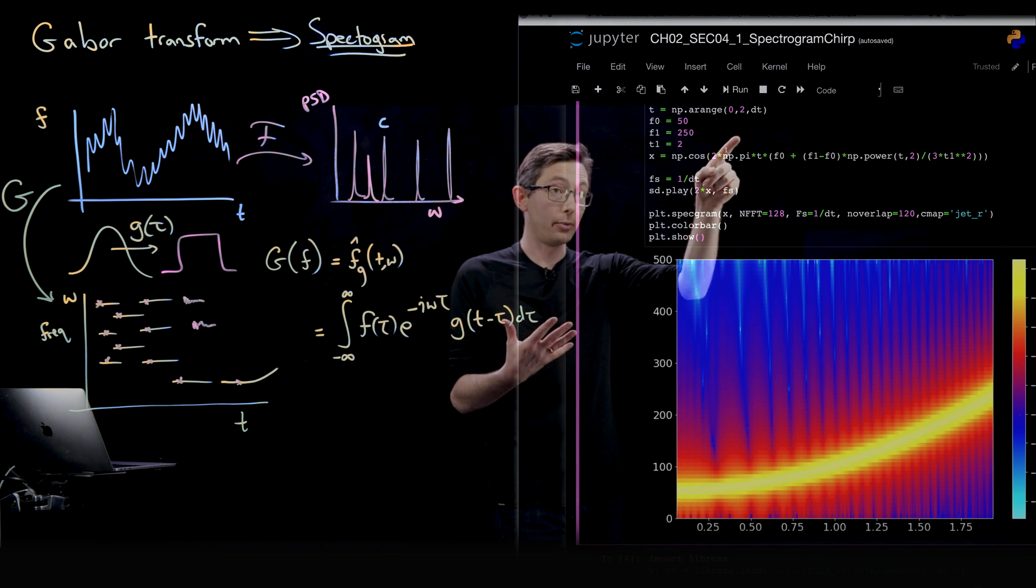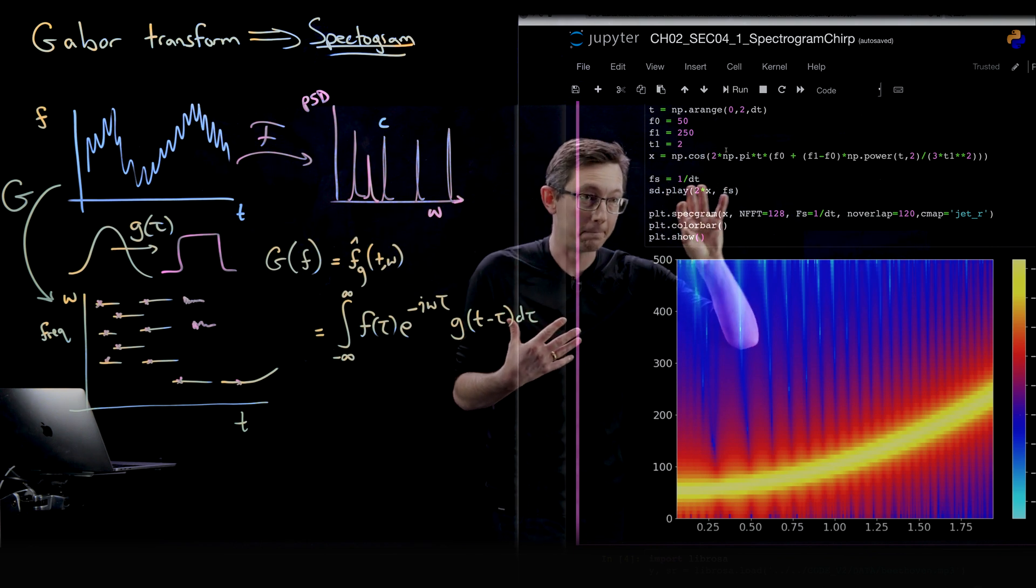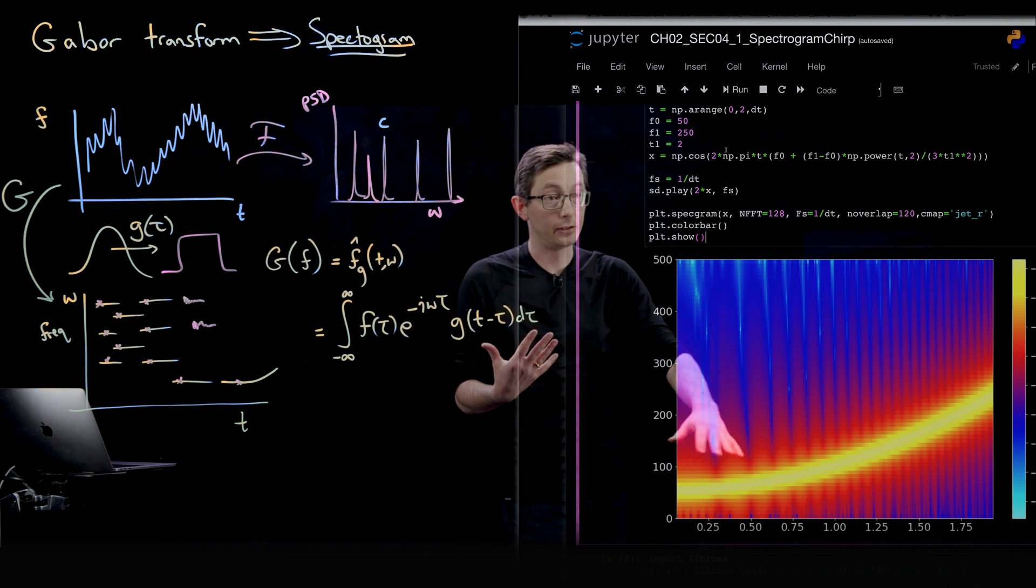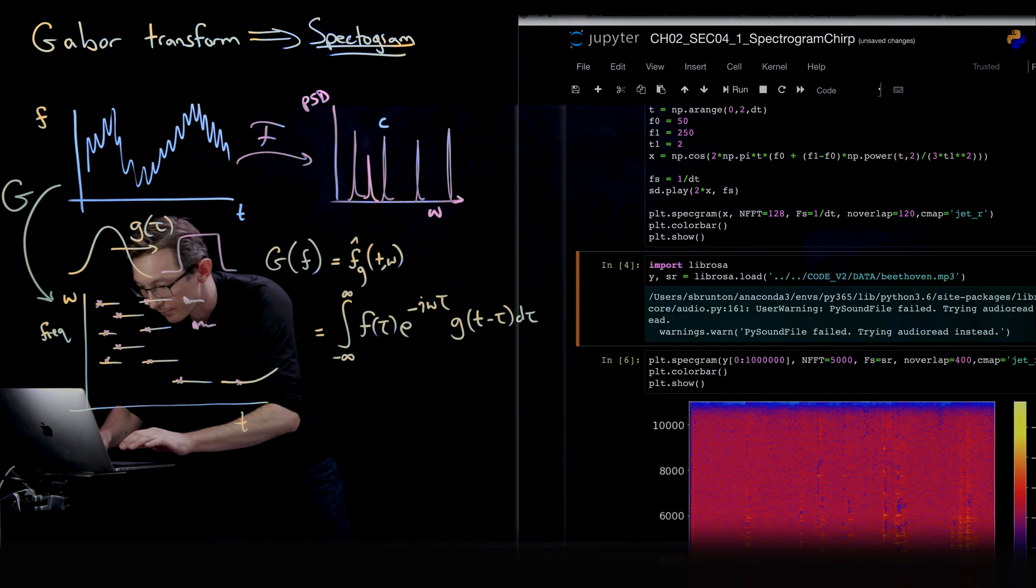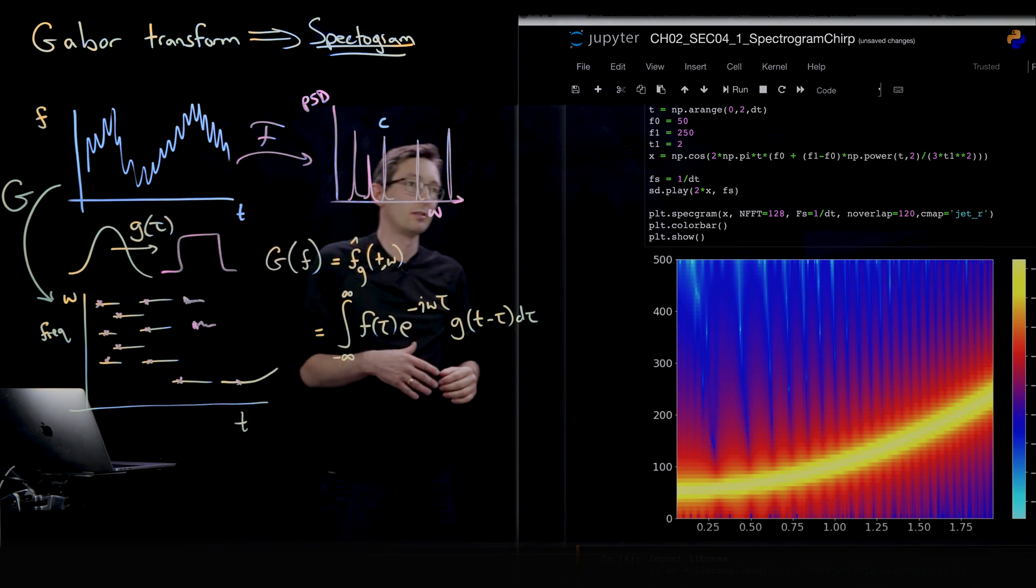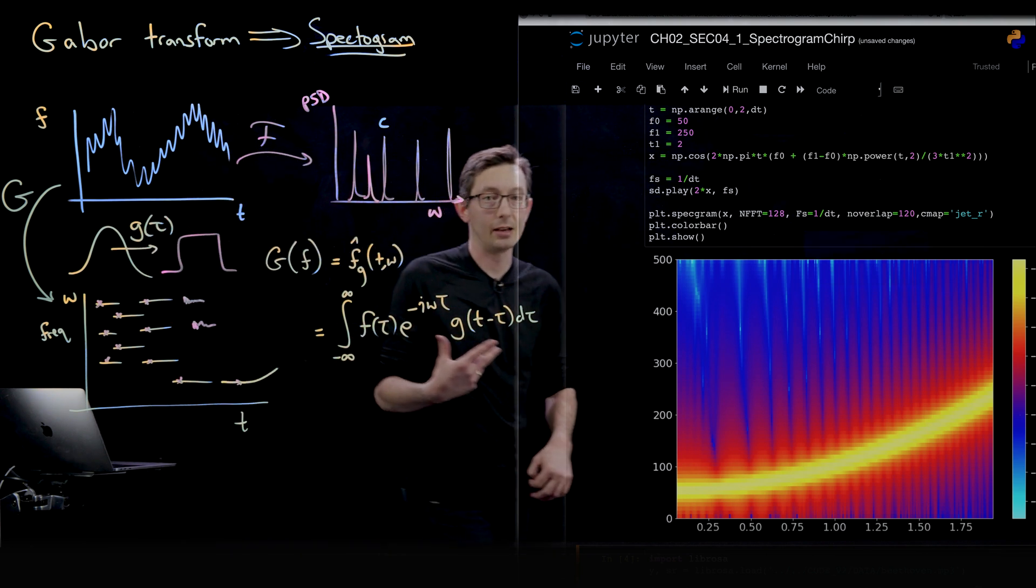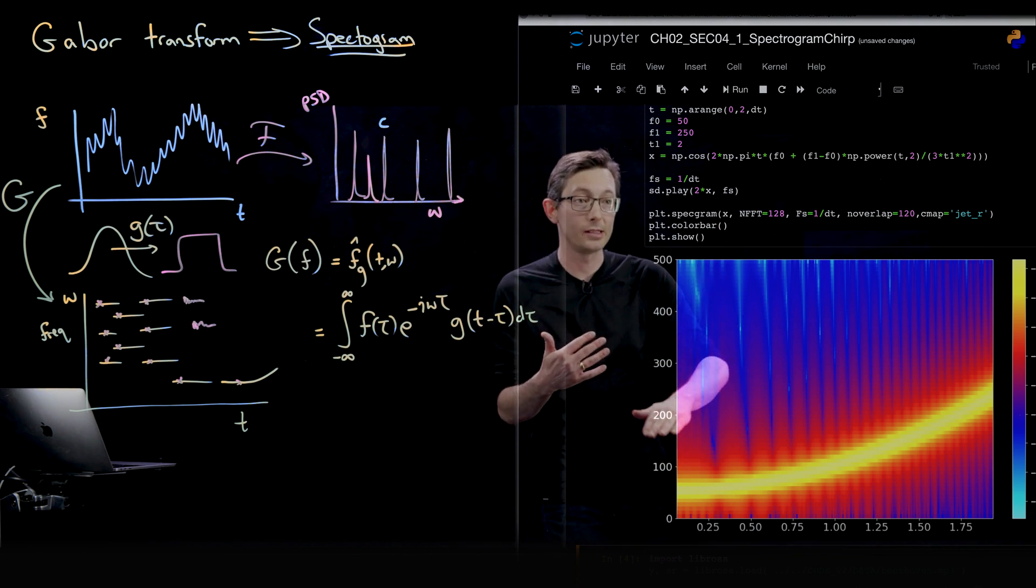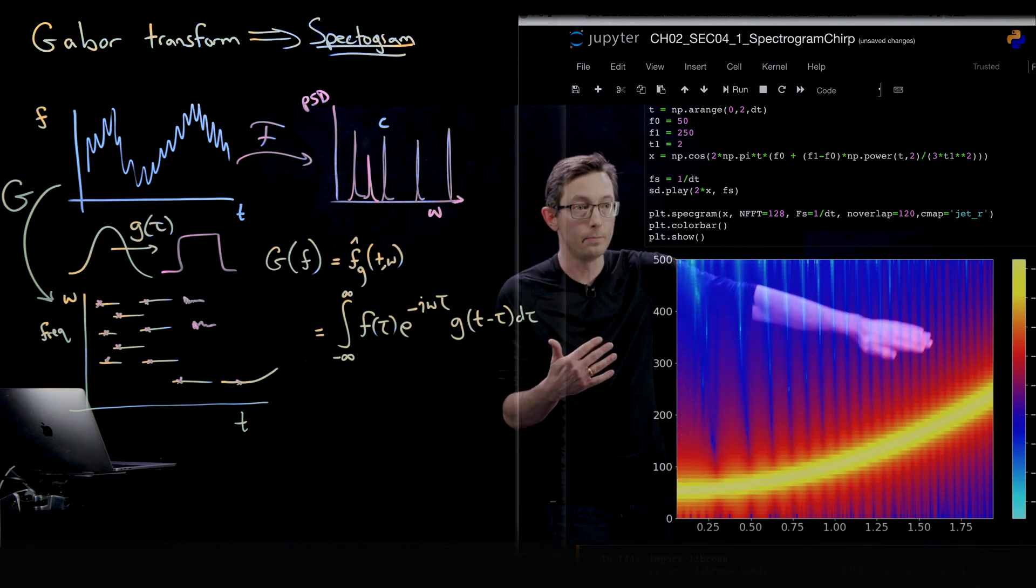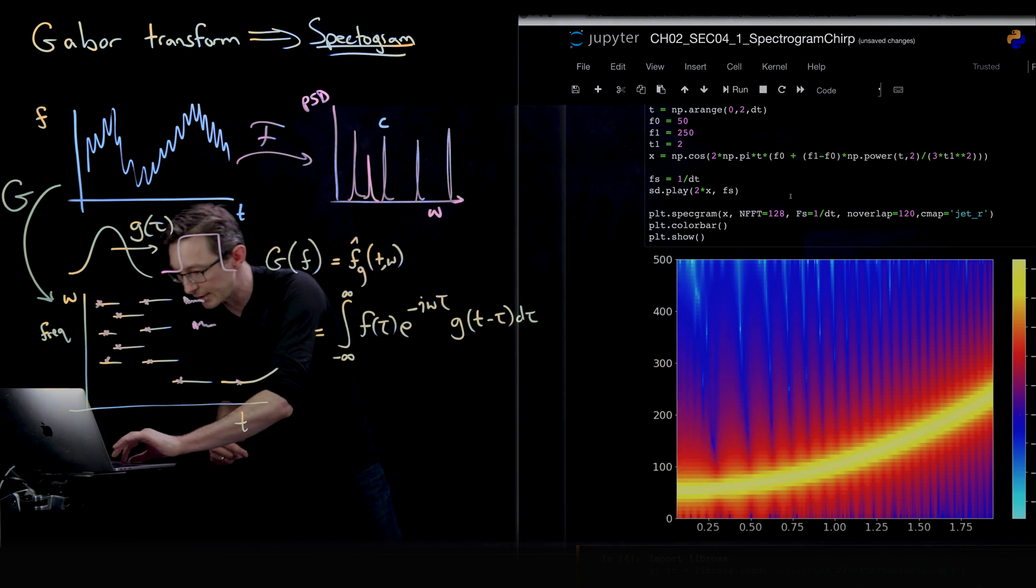And once you generate that chirp, you can plot the spectrogram and it looks like this. So I'm actually going to run this code. So the Python's not playing the sound nearly as nicely as MATLAB, but it went from low frequency to high frequency. Like that, so low frequency to high frequency.